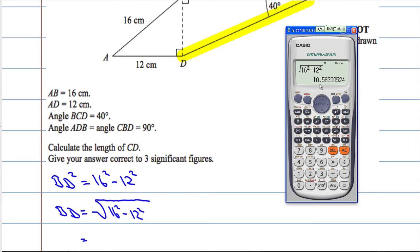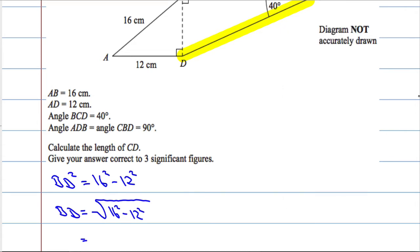And that will give me 10.58300524. Let's just write this down to four decimal places for now. 10.5830. In fact, let's write the whole lot. 0.524.